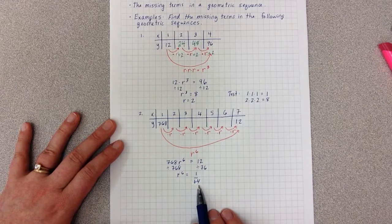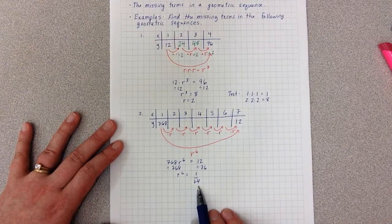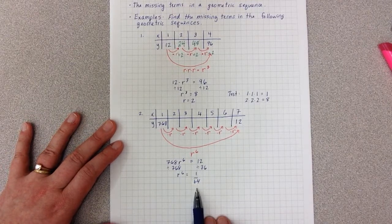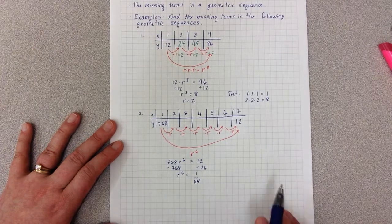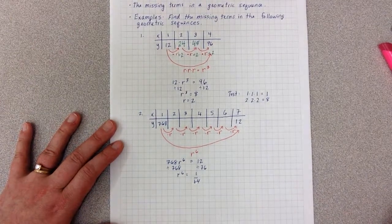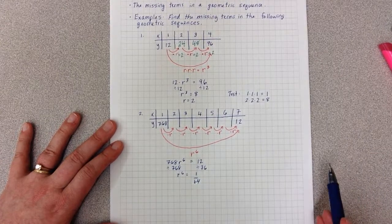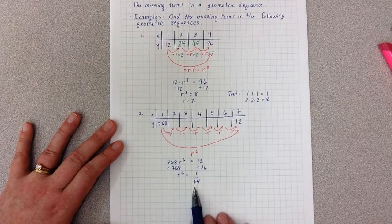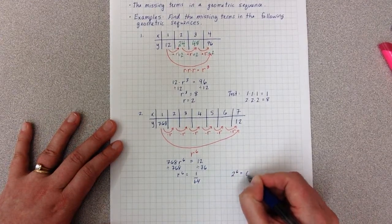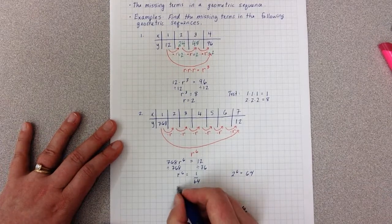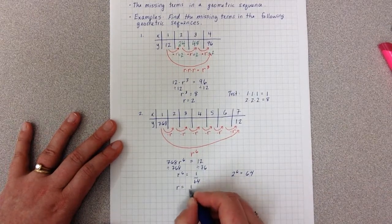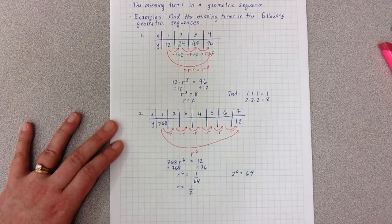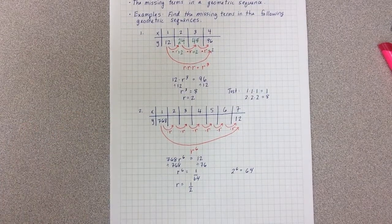I can test what number times itself 6 times gives me 64. Putting 1 times itself 6 times into the calculator gives me 1 — that doesn't work. Trying 2: 2 times 2 times 2, six times, actually does give me 64. So 2 to the 6th equals 64, which means R is 1 over 2, because the 64 is in the denominator. So R equals one half.